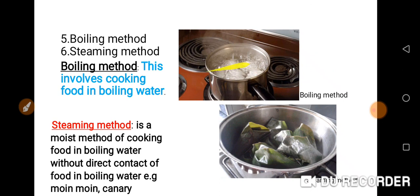When you talk about boiling method, the food has direct contact with the water — for example, putting yam inside water. That is boiling method. Compared to steaming method, we use leaves to wrap the food, so the food does not have direct contact with the water. So this is steaming method, and this is boiling method. I hope you can differentiate between the two now.